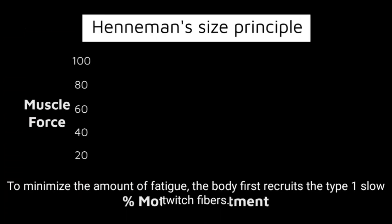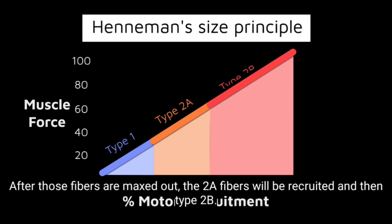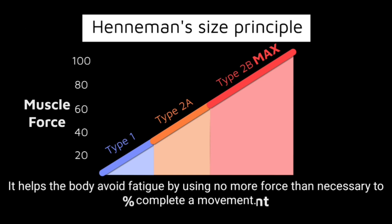To minimize the amount of fatigue, the body first recruits the type 1 slow twitch fibers. After those fibers are maxed out, the 2a fibers will be recruited and then type 2b. This is known as Henneman's size principle. It helps the body avoid fatigue by using no more force than necessary to complete a movement.